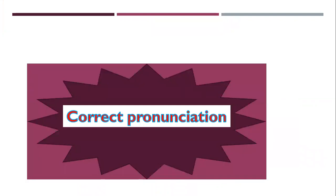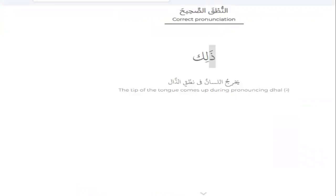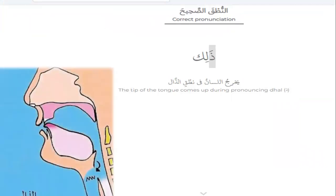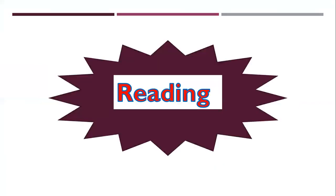Correct pronunciation. The tip of the tongue comes up during pronouncing Zal. It's Azza — this is the tip of the tongue — Zal, Azza.